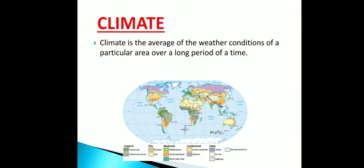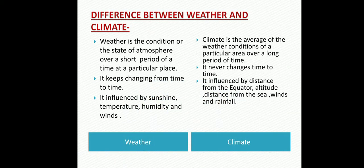Climate is the average of the weather conditions of a particular area over a long period of time. Weather is the condition or state of the atmosphere over a short period of time at a particular place. Weather keeps changing from time to time and is influenced by sunshine, temperature, humidity, and winds.